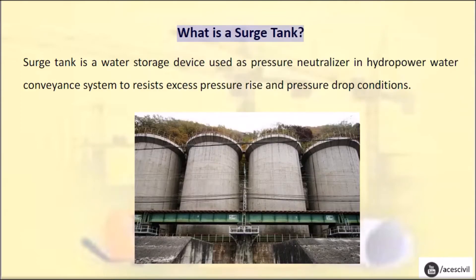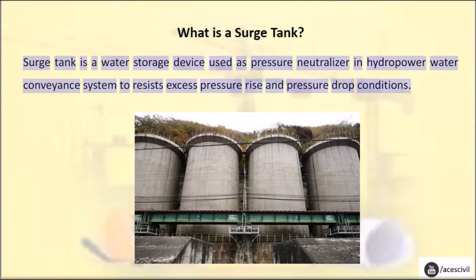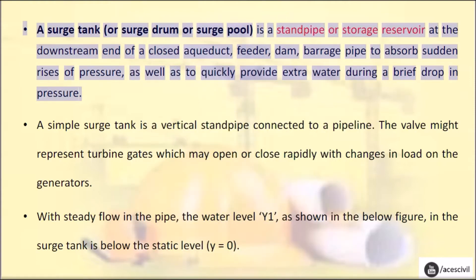What is a Surge Tank? A Surge Tank is a water storage device used as a pressure neutralizer in a hydropower water conveyance system to resist excess pressure rise and pressure drop conditions. A Surge Tank, or Surge Drum or Surge Pool, is a standpipe or storage reservoir at the downstream end of a closed aqueduct, feeder, dam, or barrage pipe to absorb sudden rises of pressure, as well as to quickly provide extra water during a brief drop in pressure.